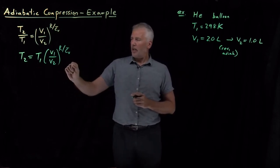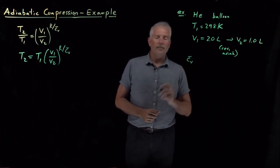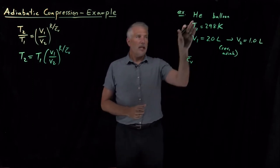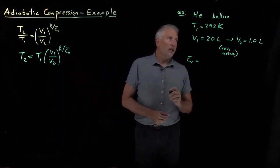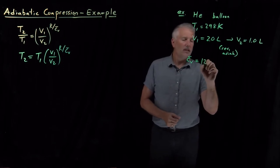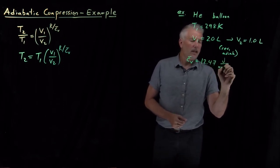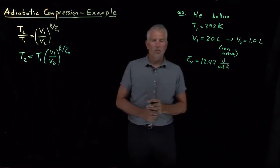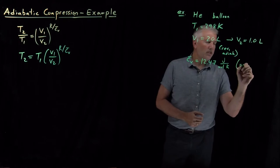Before we do, I suppose I also need to tell you what the heat capacity is of helium, so that we can use this expression. Quantitatively, the heat capacity CV for helium gas is 12.47 joules per mole K. That won't be a surprise to you.